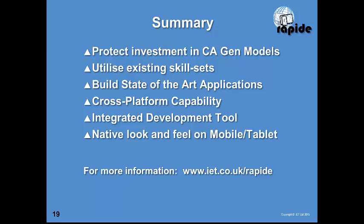In summary, the key aspects of RAPID are: protection of your investment in existing CA Gen models — whether block mode, GUI, or web applications — using the same models and existing skill sets, while enabling you to go way beyond the current capabilities of Gen to build much more dynamic, state-of-the-art applications, with cross-platform capability so you design once and run on multiple platforms.